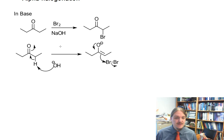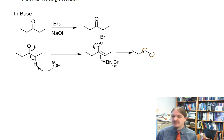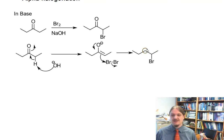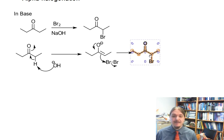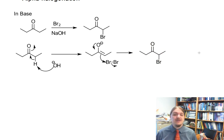As I shared in the previous video on the acidic version, this is not a whole lot different from the reaction of any alkene with bromine or one of the other halogens, except that it's an enolate, so the product looks a little bit different.